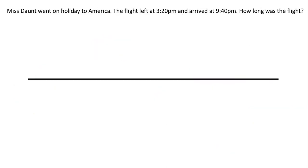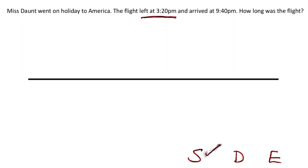The next type — see which information is missing. Miss Daunt went on holiday to America. The flight left at 3.20pm and arrived at 9.40pm. How long was the flight? We're looking to see which one is missing: the start, duration, or end. When talking about a flight, when it leaves is the start and arrives is the end. So we don't know the duration.